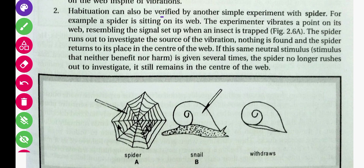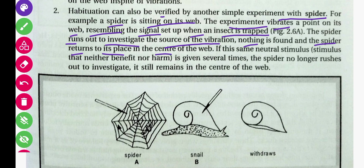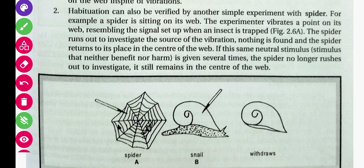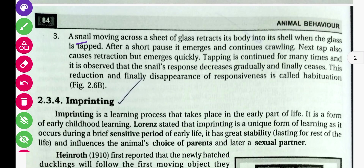Habituation can also be verified by another simple experiment with a spider. The experimenter vibrates a point of its web, resembling the signal set up when an insect is trapped. The spider runs out to investigate the source of the vibration, nothing is found, and the spider returns to its place in the center of the web. If this same neutral stimulus is given several times, the spider no longer rushes out to investigate and remains in the center of the web.